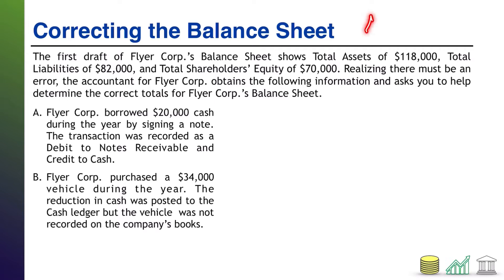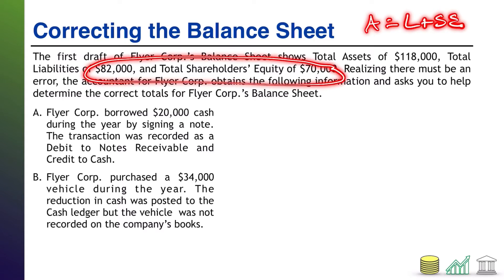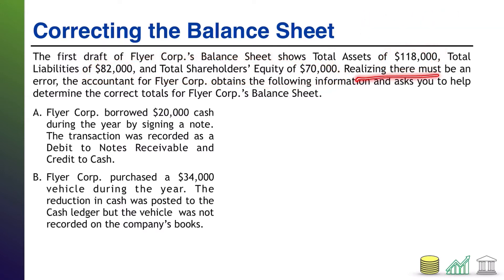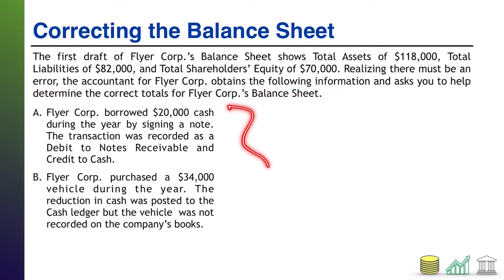Now, of course, if you know A is supposed to equal L plus SE, you can see that this is problematic, because in this case L plus SE adds up to $152,000, which does not match our A. Realizing that there must be an error, the accountant for FlyerCore obtains the following information. The goal of this problem is to apply that information to figure out what the true balance of assets, liabilities, and shareholders' equity should be.